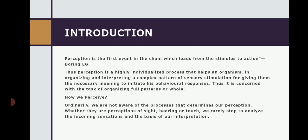Perception is the first event in the chain which leads from stimulus to action. First, we need to understand what stimulus is and what sensory organs are. In the environment, many events occur — any event, any person, any thing — each of these is a stimulus for the person who is perceiving. For the perceiver, any event and everything happening in that event constitutes stimuli.